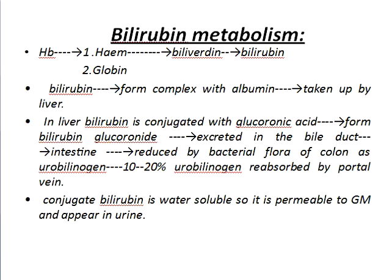Now, what is bilirubin metabolism? You know the RBC lifespan is 120 days. After 120 days, the RBC is automatically broken and hemoglobin comes out. Hemoglobin has two parts: heme and globin. Globin goes to the protein pool. Heme has two parts: iron and protoporphyrin. Iron is stored as ferritin. Then protoporphyrin converts into bilirubin. Bilirubin forms a complex with albumin and is taken up by the liver.